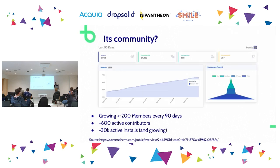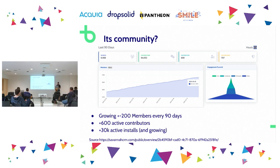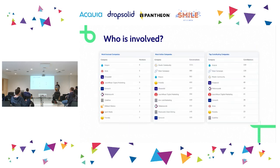The Mautic community is growing — 200 new members every three months, 600 active contributors, and 30,000 active installs. HubSpot has 600,000 installs, of which 120,000 are paid. So HubSpot is still about 20 times bigger — it's the main competitor in that space — but Mautic is growing and has a lot of potential.